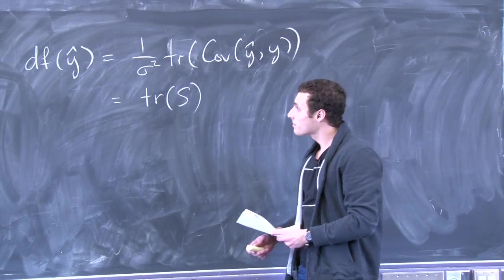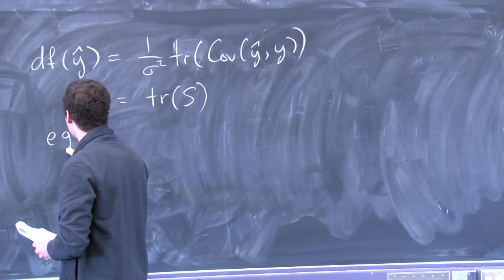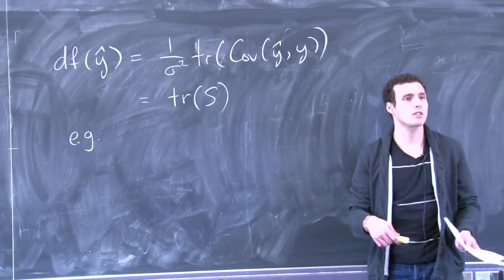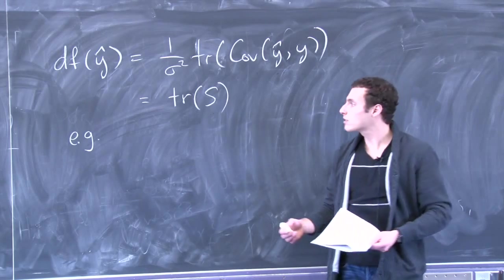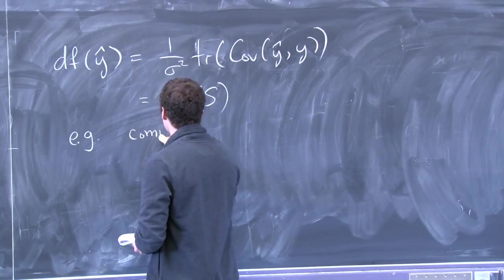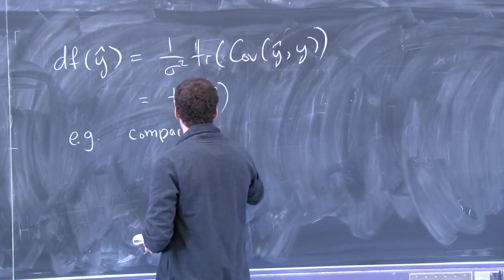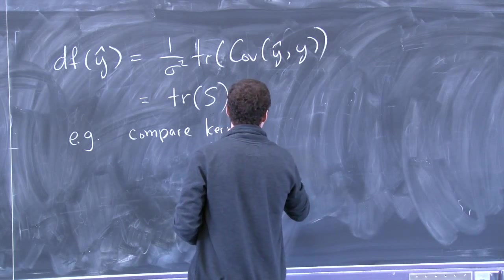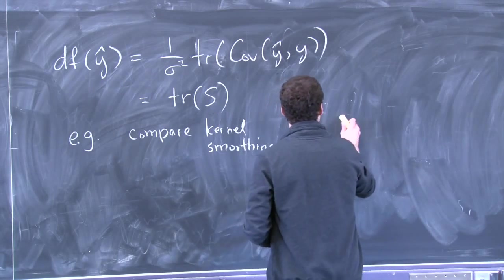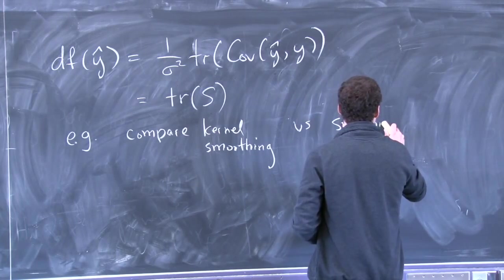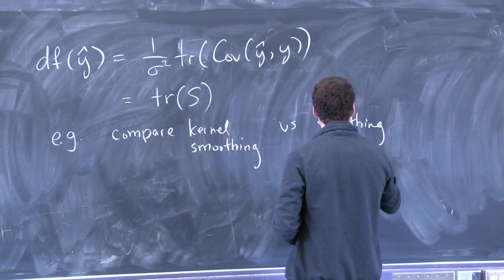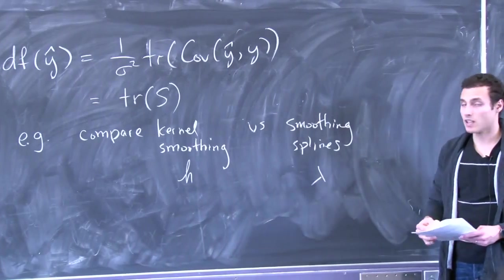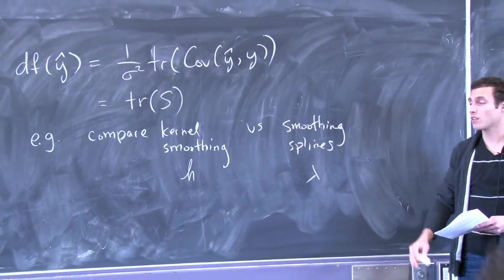This measure is useful for various reasons. Suppose you wanted to compare kernel smoothing versus smoothing splines and you weren't sure what to use. They each have a tuning parameter — for smoothing splines it's lambda, for kernel smoothing it's h, the bandwidth. These are on different scales, and they actually have different directions in terms of implied complexity. As h gets bigger, the kernel smoothing operation is less complex because you're averaging over more points. The same is true with lambda in a sense — they have the same direction but are on totally different scales.